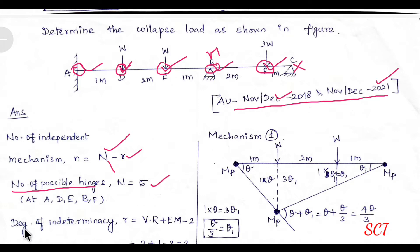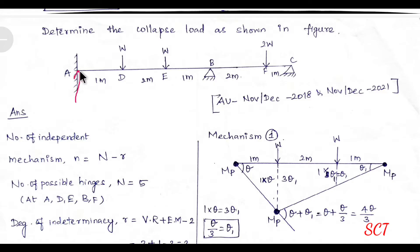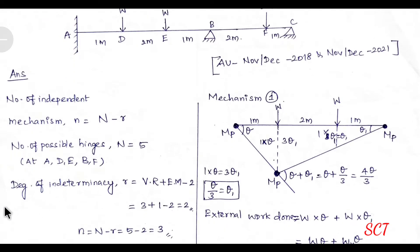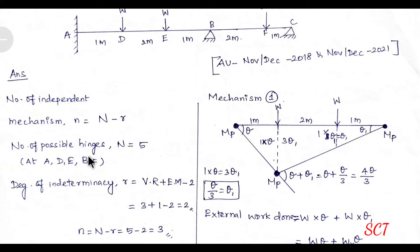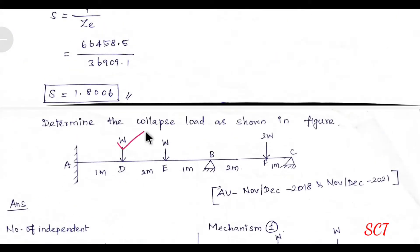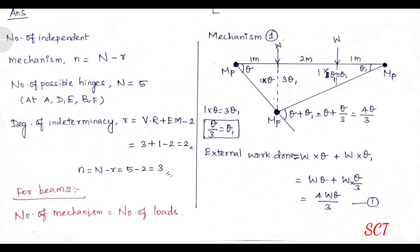So N equals 5. Next, degrees of indeterminacy R equals vertical reactions. After calculation, there are 3 mechanisms. For beams, the number of mechanisms equals the number of loads, which is 3. Very simple — so this is 3.